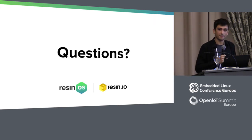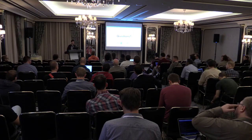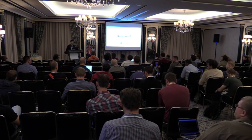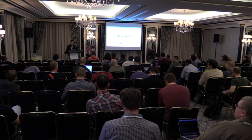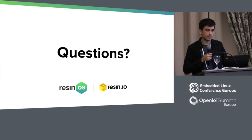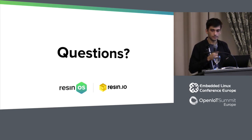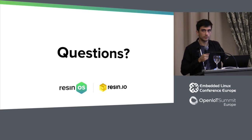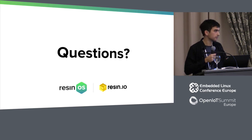Q&A: The fleet management is what we do in the Resin IO platform, using the operating system to manage that. The Resin IO platform is not open source currently, but we are planning to open source that part as well. For now, what I would do is run an OpenVPN server on a Resin OS device and have it connect to a server of yours — and you could take it from there.